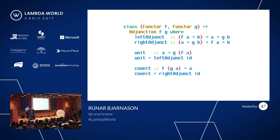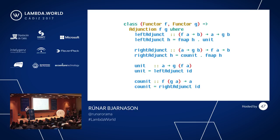To make an adjunction, we just have to give either the right adjunct and the left adjunct, or the unit and the co-unit. We can mix and match — we can define the unit and the right adjunct, and that's a perfectly good adjunction.